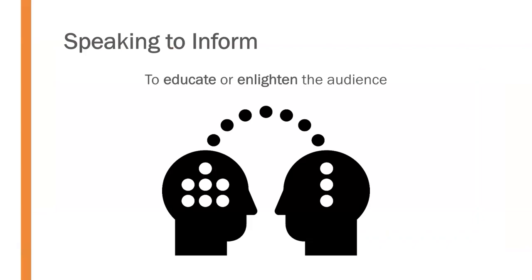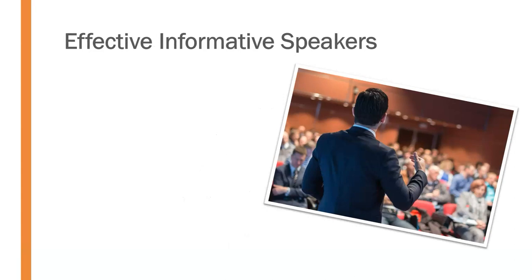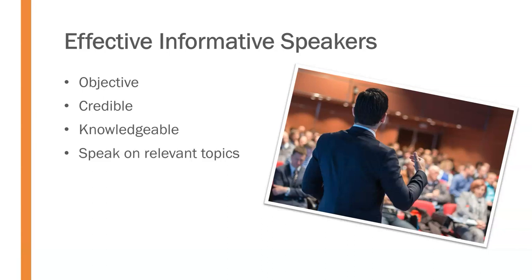When we speak to inform, our purpose and goal is to educate or enlighten the audience. We are essentially acting as a teacher, providing information for the audience without much slant or bias — really just sharing information. Effective informative speakers will strive to be objective, establish their credibility, be knowledgeable, and speak on relevant topics. These are the things you ought to embody as an effective informative speaker.